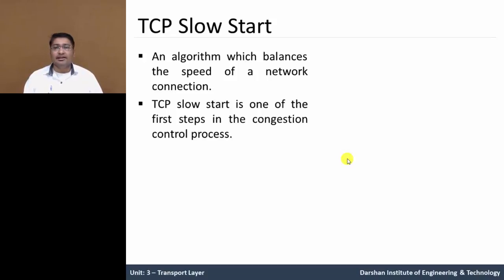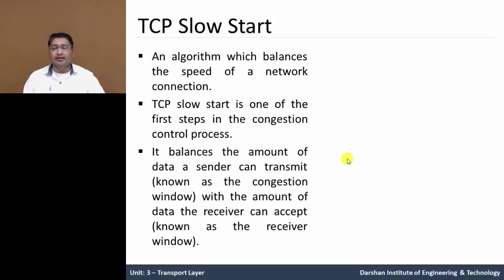TCP slow start is one of the first steps in the congestion controlling process. In that, it balances the amount of data a sender can transmit — known as a congestion window — with the amount of data which the receiver can receive or accept, known as a receiving window.